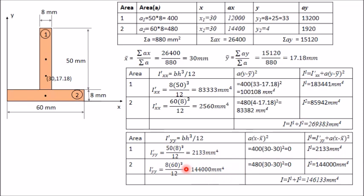Similarly, the moment of inertia of area two about the centroidal y-axis is calculated. Adding the two values gives the total moment of inertia of the composite figure about the centroidal y-axis. Since the value in mm⁴ is very large, we convert it to cm⁴: the result is 14.6133 cm⁴. This is how you calculate the moment of inertia of any composite figure.